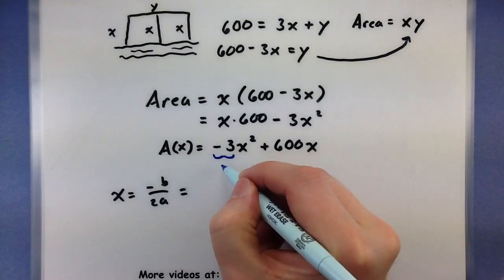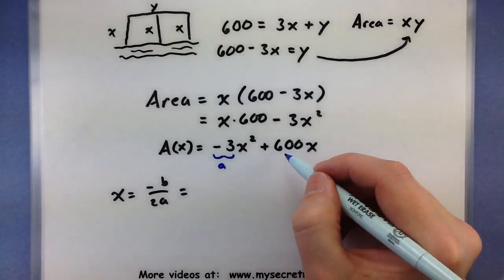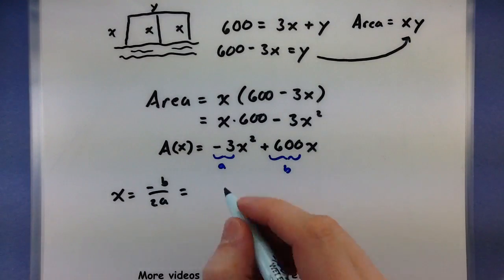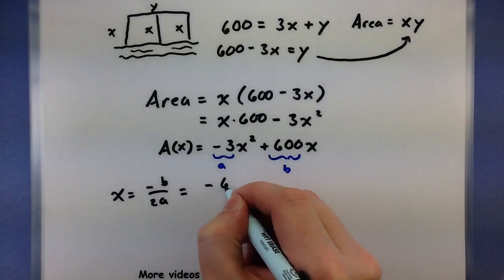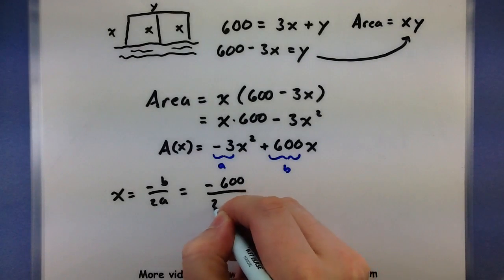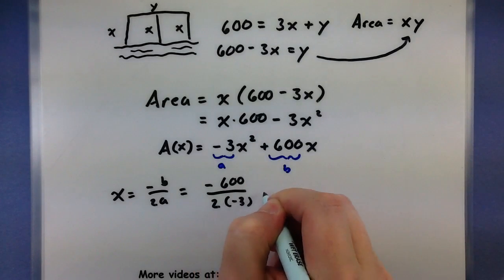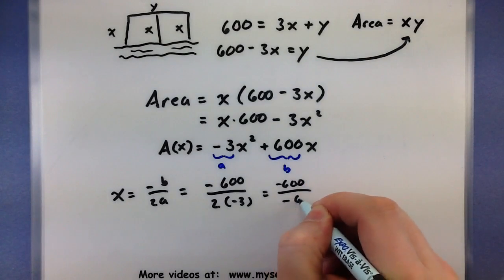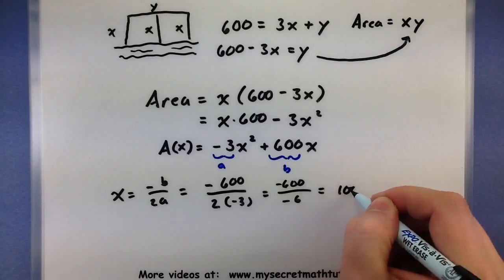Our values that we'll pick out for this: the negative 3 will be the a, and the 600 will be the b. So I have negative 600 all over 2 times the negative 3. So 600, negative, divided by negative 6, or 100.